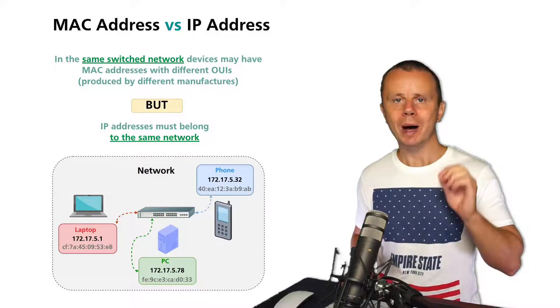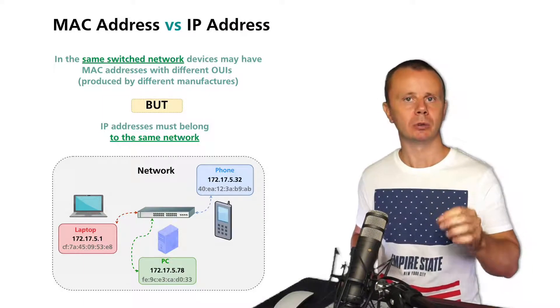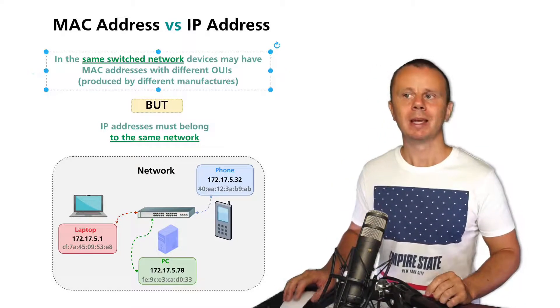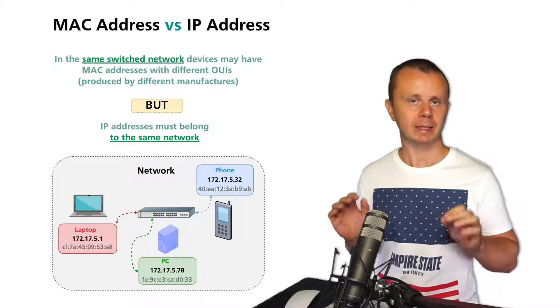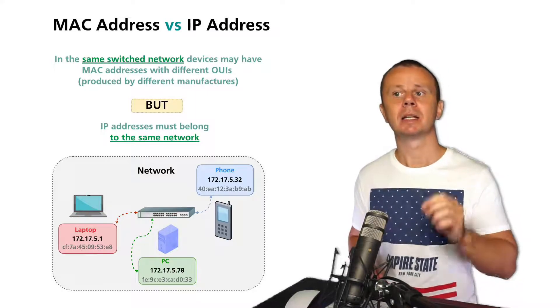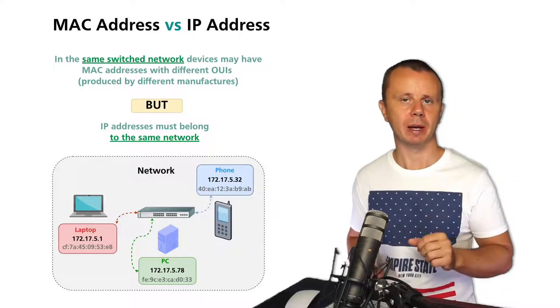Now let me explain once again the difference between MAC addresses and IP addresses, because it is very important to understand. In the same switched network, devices may have different MAC addresses assigned by different manufacturers, and every MAC address has its own Organizationally Unique Identifier. It is the first part of every MAC address.